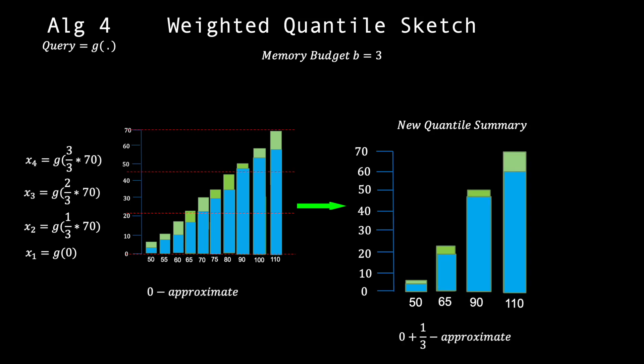Theorem A2 shows that this new quantile summary is epsilon plus 1 on B approximate, thus introducing error into our summaries. This is okay though, as we have been able to reduce our memory usage and we are ready to test out all the split candidates, super fast.